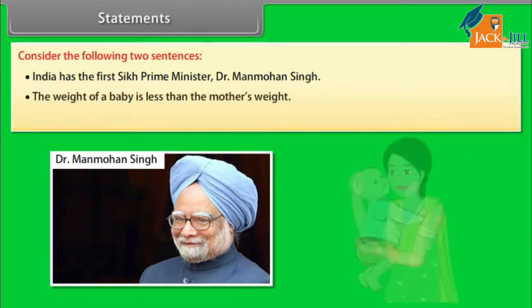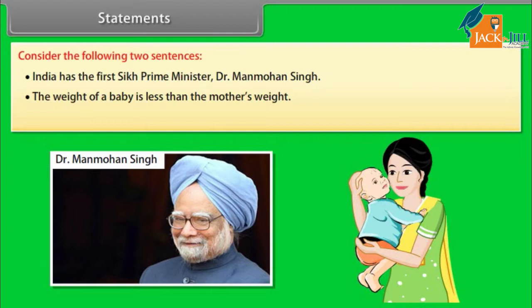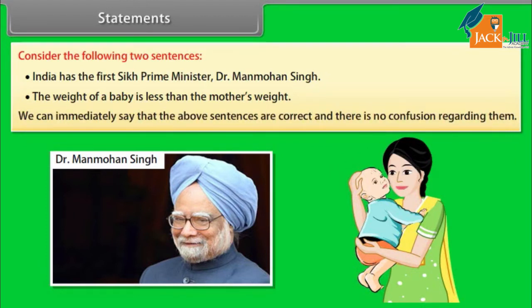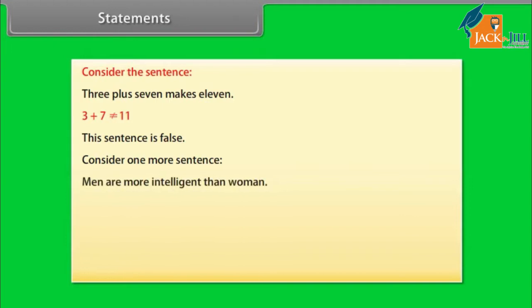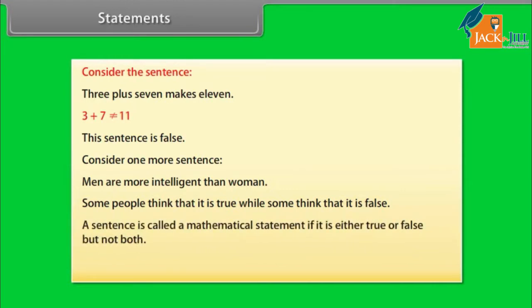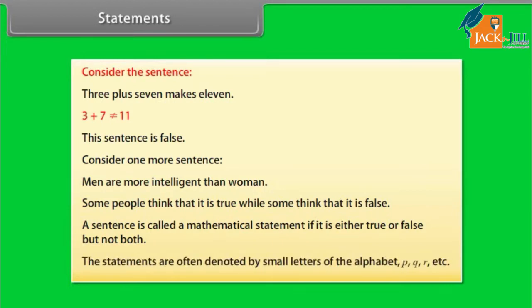The weight of a baby is less than the mother's weight. We can immediately say that the above sentences are correct and there is no confusion regarding them. Consider the sentence: 3 plus 7 makes 11. This sentence is false. Consider one more sentence: men are more intelligent than women. Some people think it is true, while some think it is false. A sentence is called a mathematical statement if it is either true or false, but not both. Statements are often denoted by small letters P, Q, R, etc.